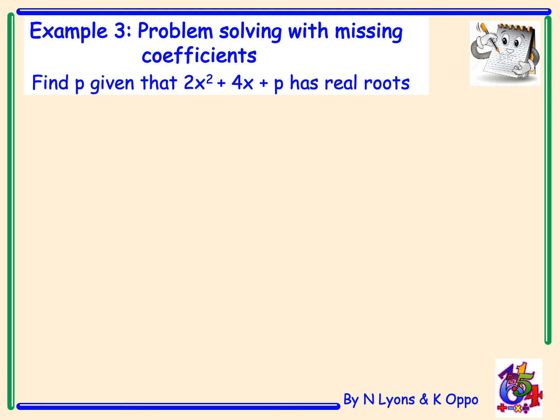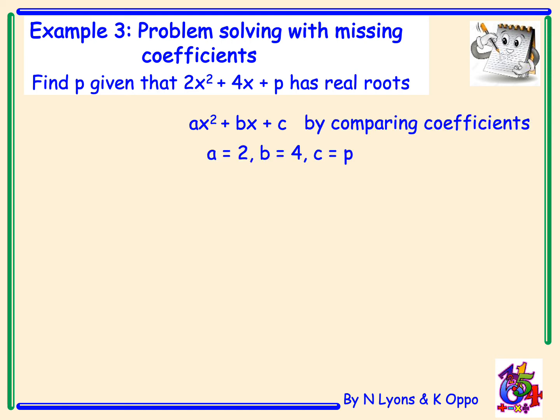Write down the general form ax squared plus bx plus c and compare the coefficients: a equals 2, b equals 4, and c equals p. Now I have to solve for p. Calculate the discriminant b squared minus 4ac. This time we know the function has real roots, so the discriminant must be greater than or equal to zero. I can now put down the condition: b squared minus 4ac is greater than or equal to zero.